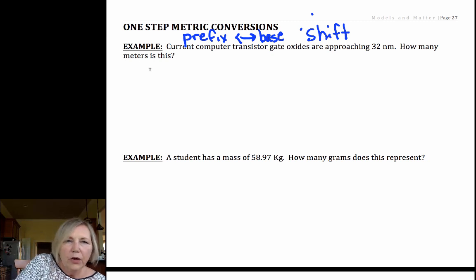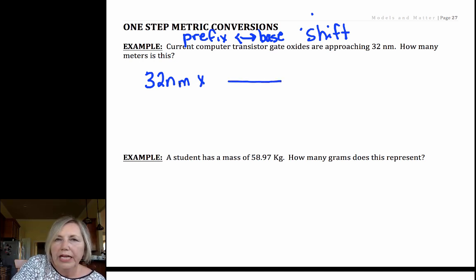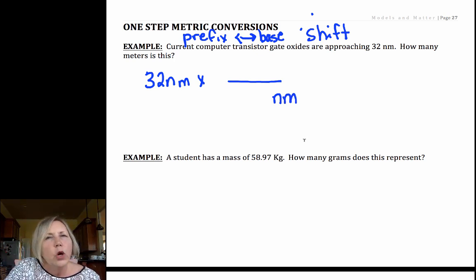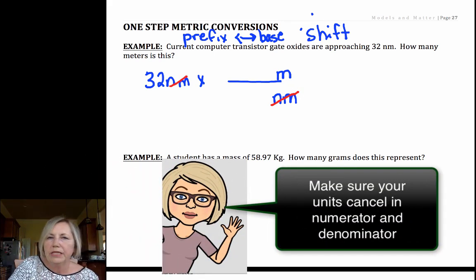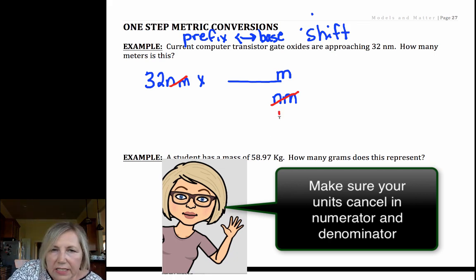So I have 32 nanometers. I want to get rid of nanometers. They're in a numerator, so to eliminate them, I'm going to put them in the denominator. Now notice I'm putting my units in before I worry about a conversion factor. Then I'm going to put my meter on top. Now look, nanometers cancel nanometers. I'll be left with meters. Now here's what I want you to do. Find the prefix. Nano is a prefix. Find the prefix. Put the 1.